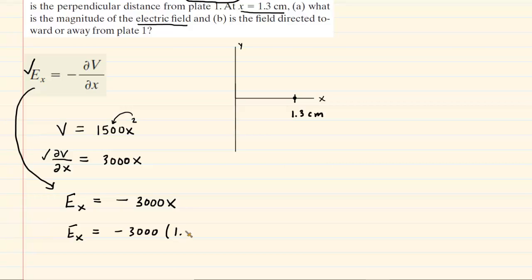You'd have to take your 1.3 and then multiply that by 10 to the negative 2, which converts that into meters. Now when you plug this into a calculator, you will end up getting negative 39.